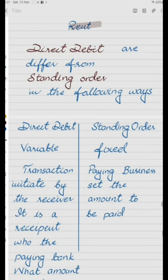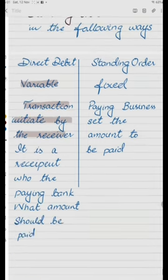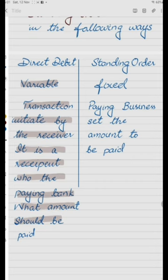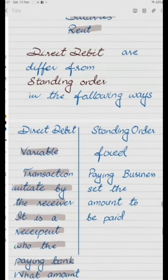Direct Debit differs from the standing order in the following ways. In case of direct debit, the amount is variable, and the transaction is initiated by the receiver — it is the recipient who tells the paying bank what amount should be paid. While in case of standing order, the amount to be paid is fixed, and the paying business sets the amount to be paid.